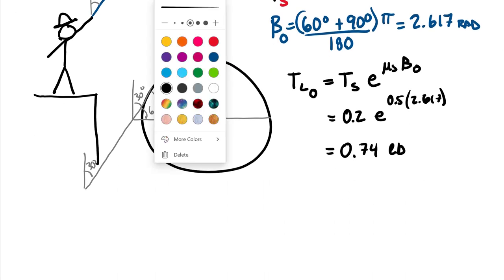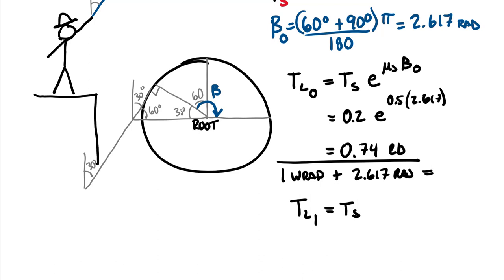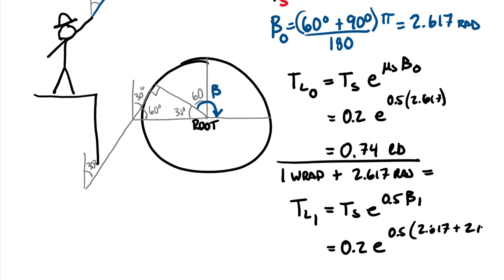With one wrap, beta-1 equals 2 pi plus 2.617. Then T sub L with one wrap equals 0.2 times e to the (0.5 times beta-1), which equals 0.2 times e to the 0.5 times (2.617 plus 2 pi). That gives a total available tension of 17.1 pounds — still not enough to support 250 pounds.